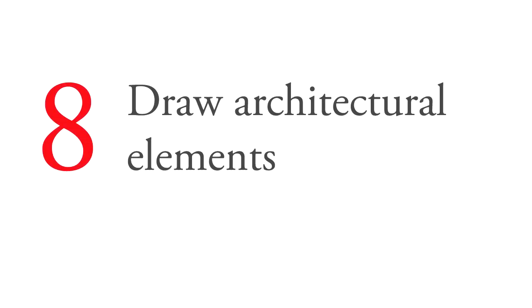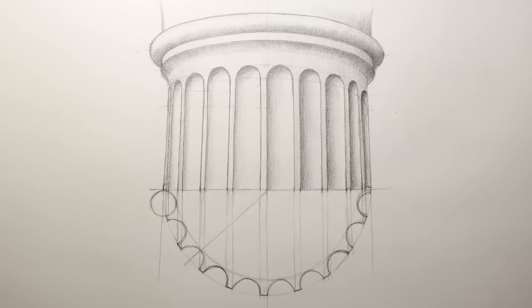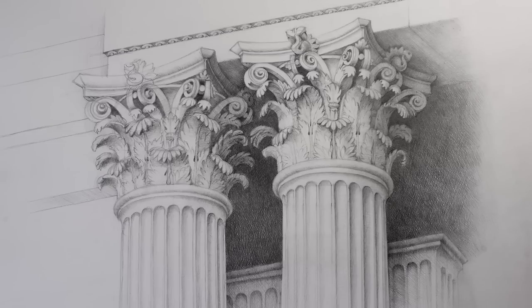Number eight, draw architectural elements. When you are comfortable with simple geometric still lives, you may advance to more complex arrangements of objects, or you can move to drawing architectural elements like corbels, classical column capitals, rosettes, and the like.